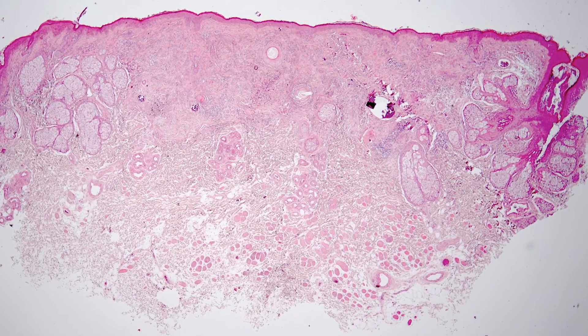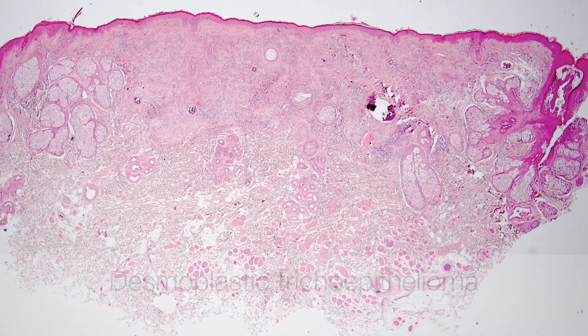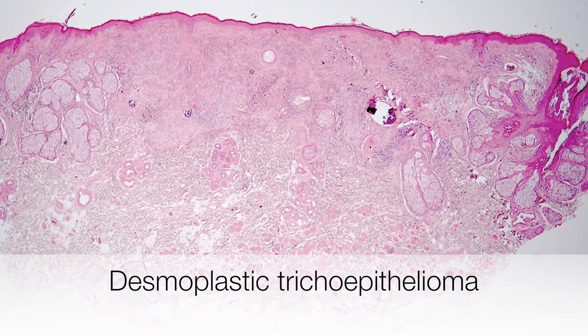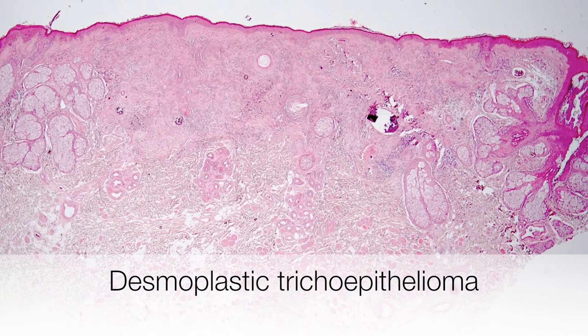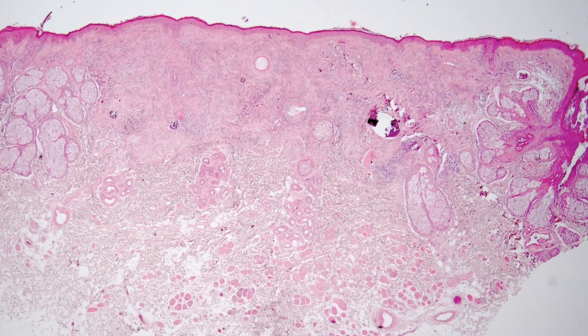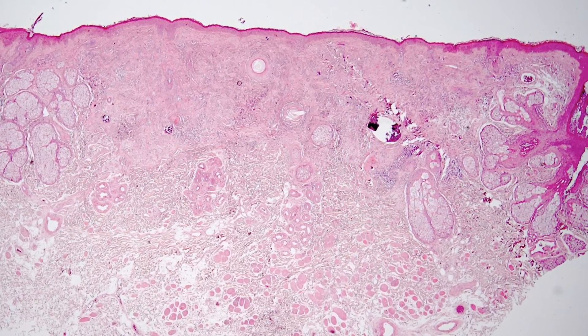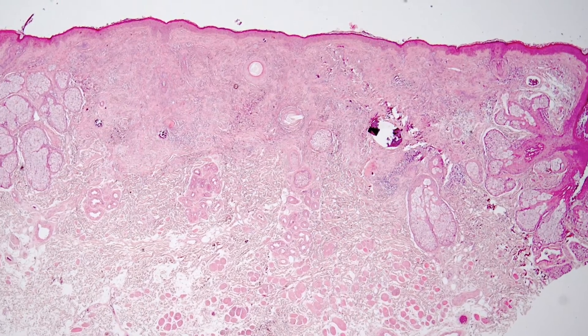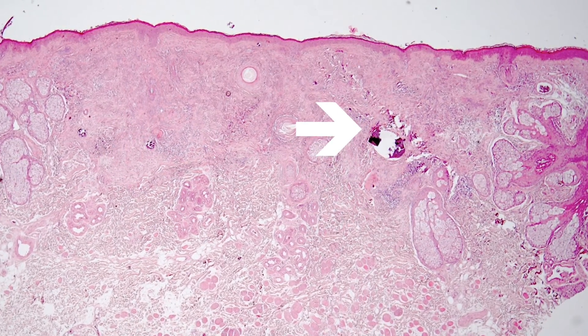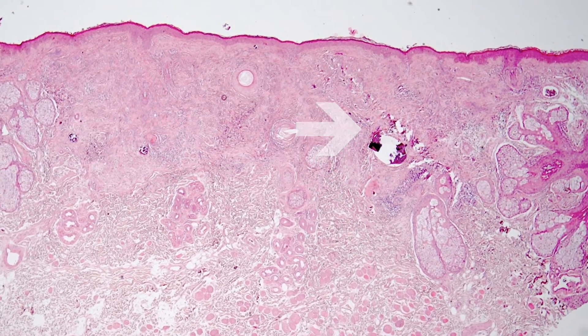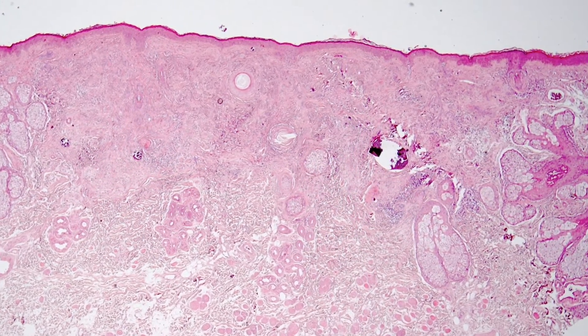This is a very low-power view of a desmoplastic trichoepithelioma. At the top right of the picture is a purple area. This is a calcified horn cyst.